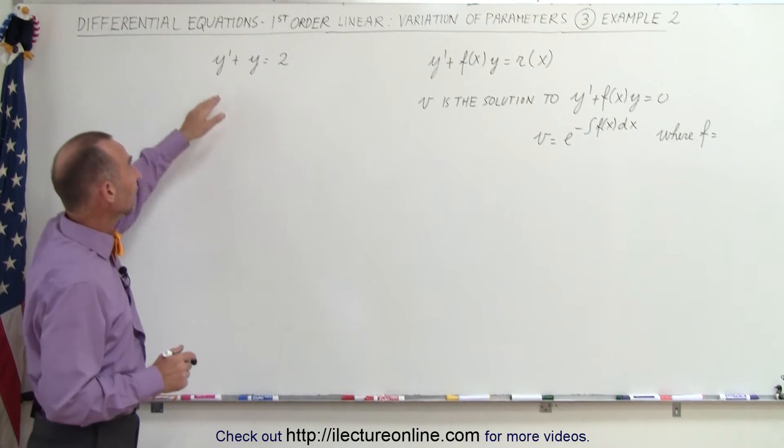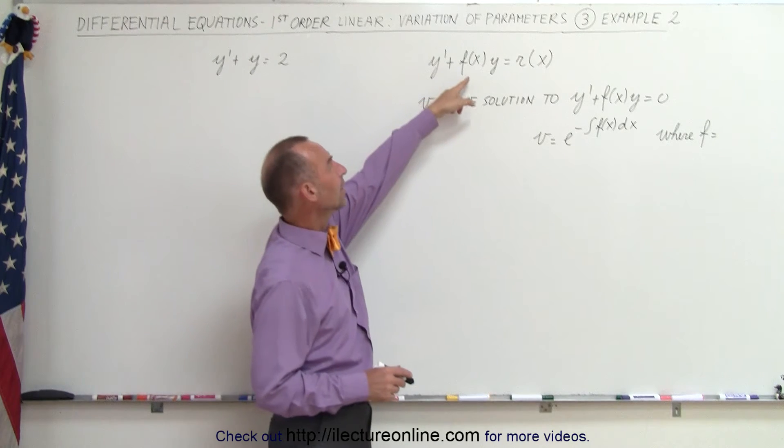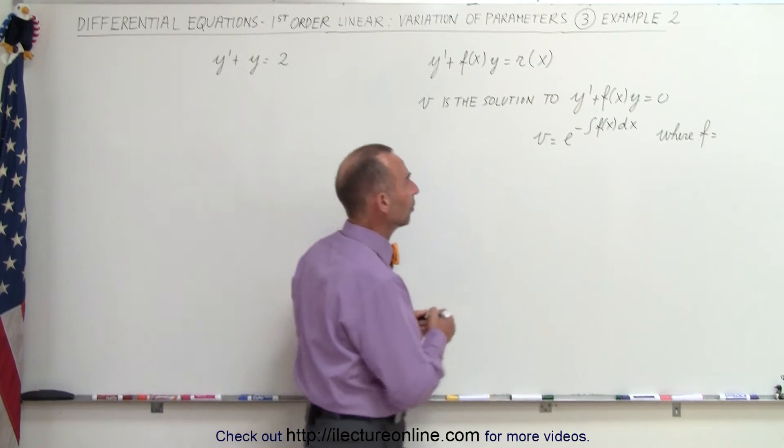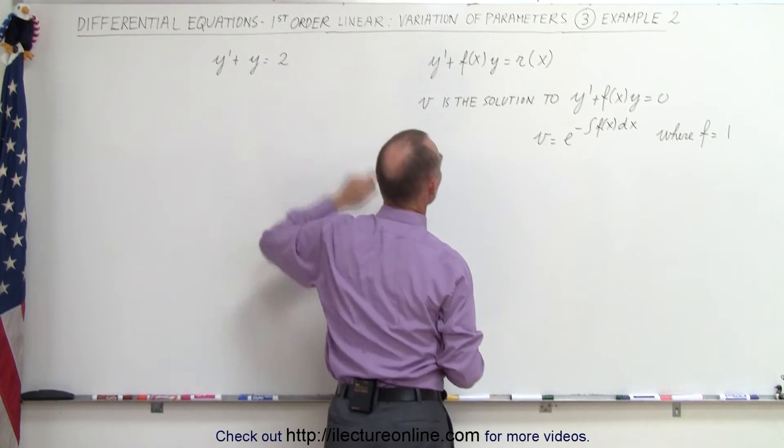First of all, we know that this is a linear, non-homogeneous differential equation because it is in this form right here. Now in this case, f of x will simply be equal to 1, so we can write f equals 1. And r of x in this case is equal to 2.